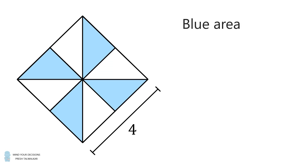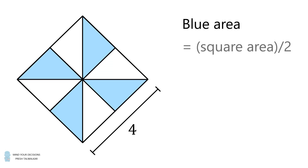Therefore the area shaded in blue is exactly half of the square's area. The square's area is equal to 4 times 4, which is equal to 16, and if we take that divided by 2, we get that the blue area is equal to 8. And that's the answer.